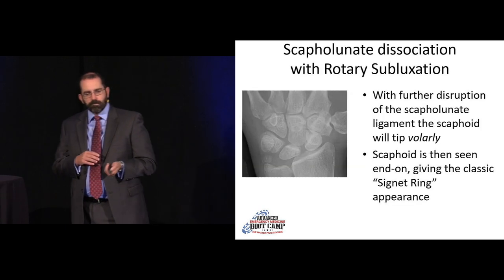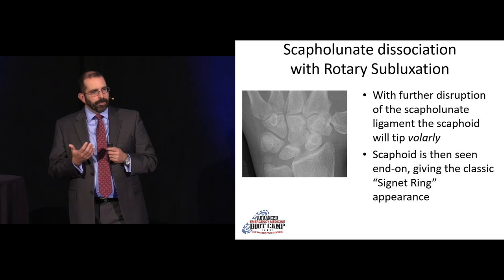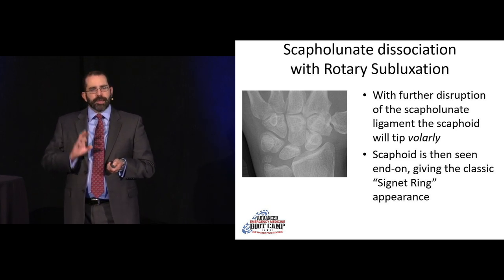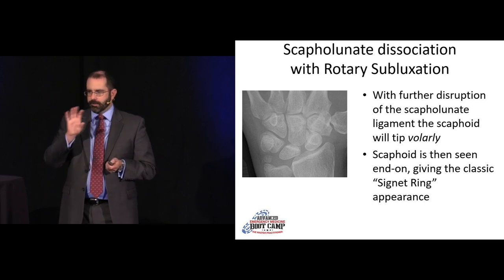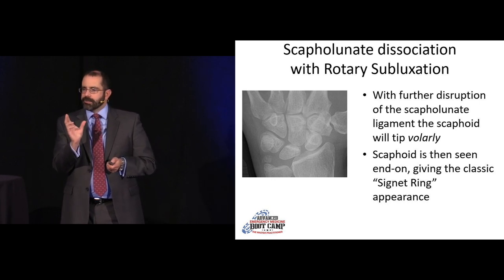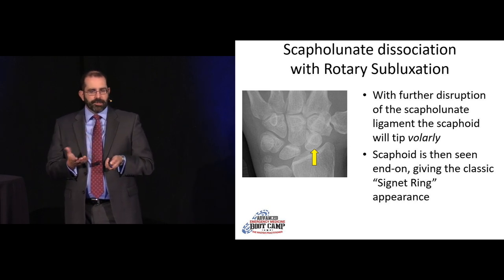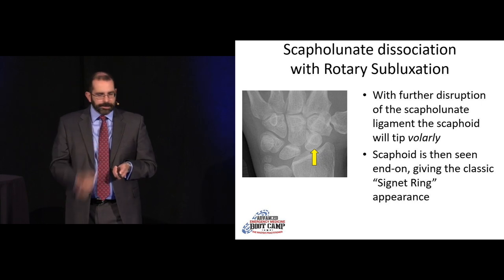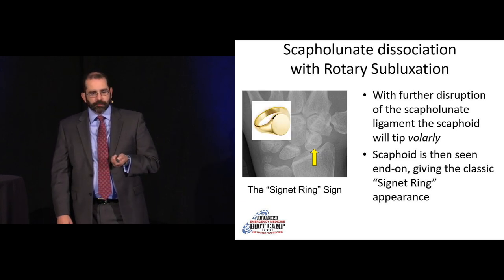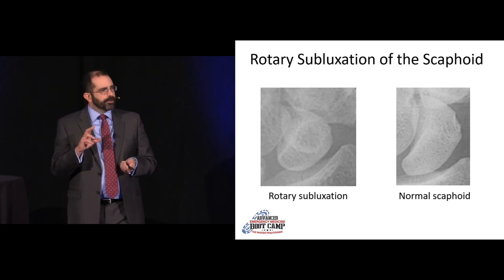Scapholunate dissociation is unstable and often requires operative fixation. Carpal injuries are a spectrum — with more force, you go from a scapholunate dissociation to disruption of the other scaphoid attachments, causing the scaphoid to tip volarly. Instead of the normal coffee-bean appearance in short axis, it gives a rounded appearance — the signet ring sign — because it looks like a ring turned sideways. This is rotary subluxation of the scaphoid and is grossly unstable, requiring operative repair.